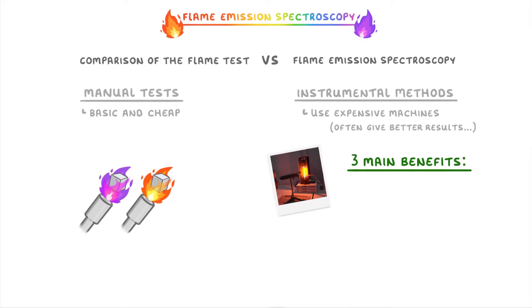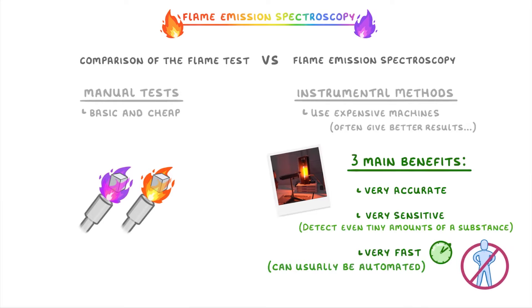The three main benefits of instrumental methods are that they're very accurate, very sensitive because they can detect even tiny amounts of a substance, and very fast because they can usually be automated, so don't need a human being doing stuff constantly.